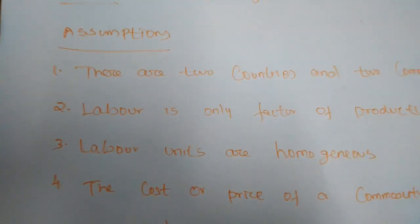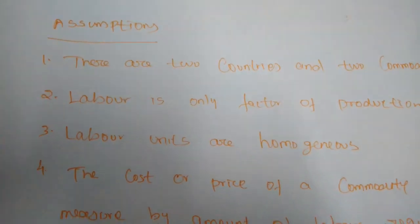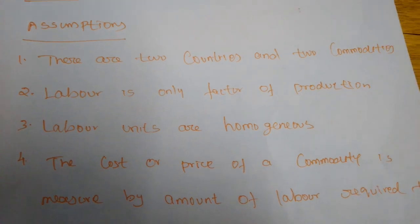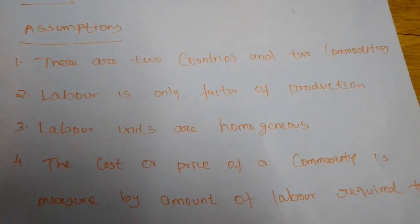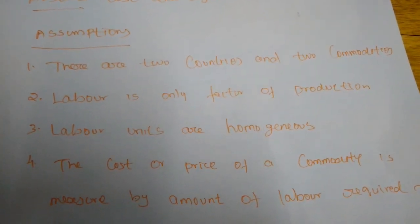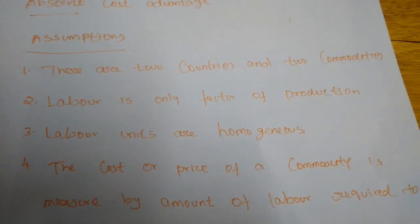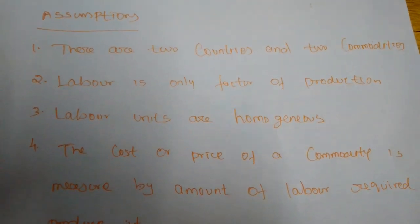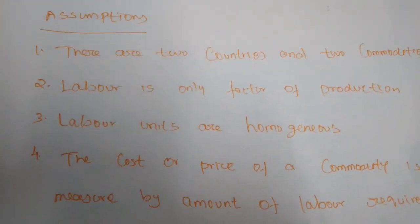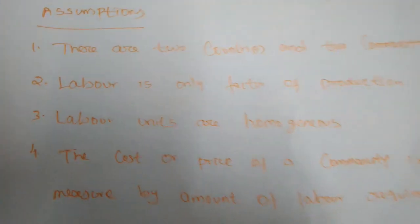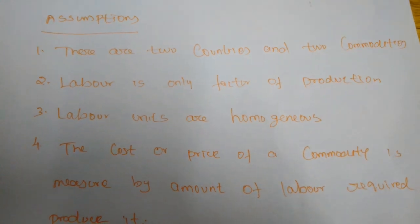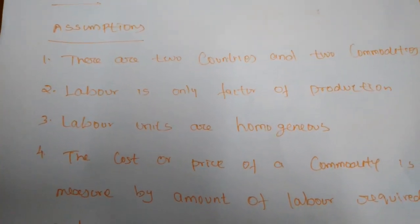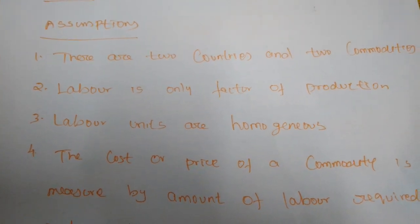For explaining this theory we must take certain assumptions. First, there are two countries and two commodities. Only two countries are involved in international trade, and both countries produce only two commodities — for example, wheat and cloth. Second, labor is the only factor of production. We assume only labor is used; there is no capital or other factors. Third, labor units are homogeneous — labor in both India and America has the same power, ability, and skills.